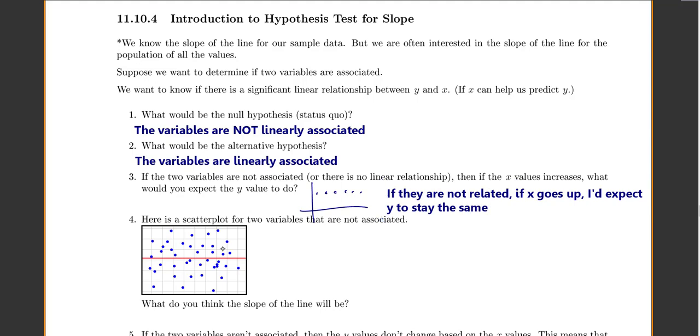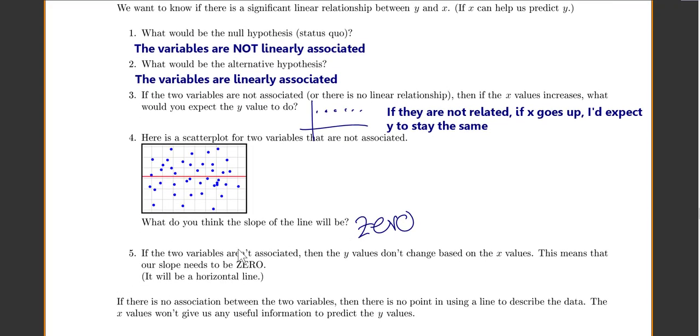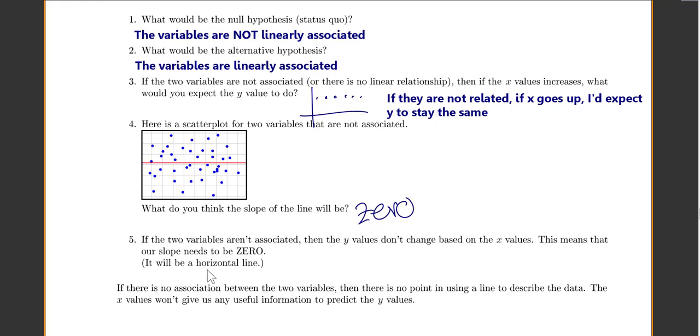And here is a scatter plot for two variables that are not related. Notice the slope of the line would have to be zero. So if your two variables aren't associated, then the y values don't change based on x values. That means our slope needs to be zero. It will be a horizontal line. Note that if there's no association between our two variables, there's no point in using a line to describe the data. The x values won't give us any useful information to predict the y values.